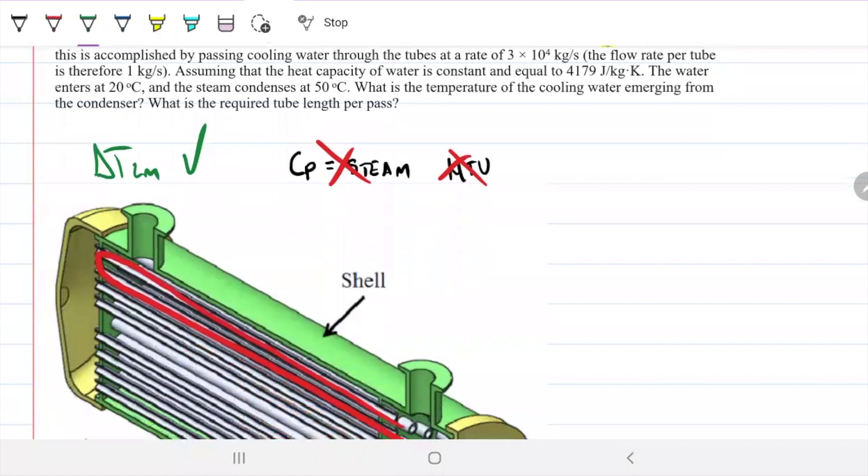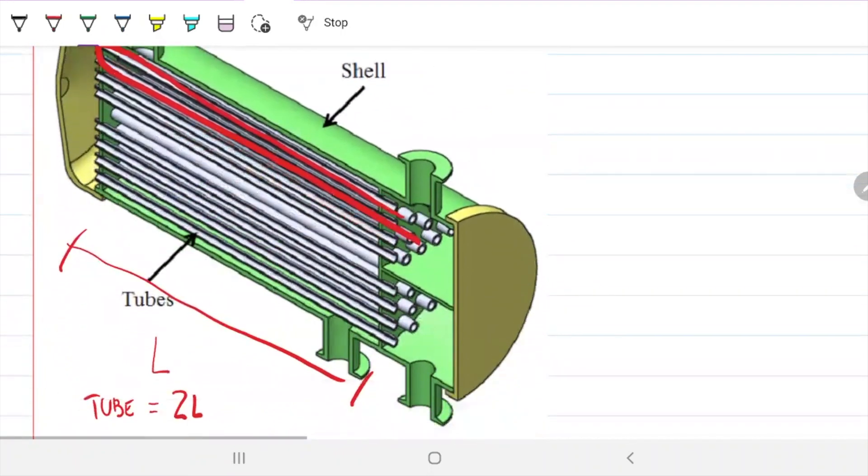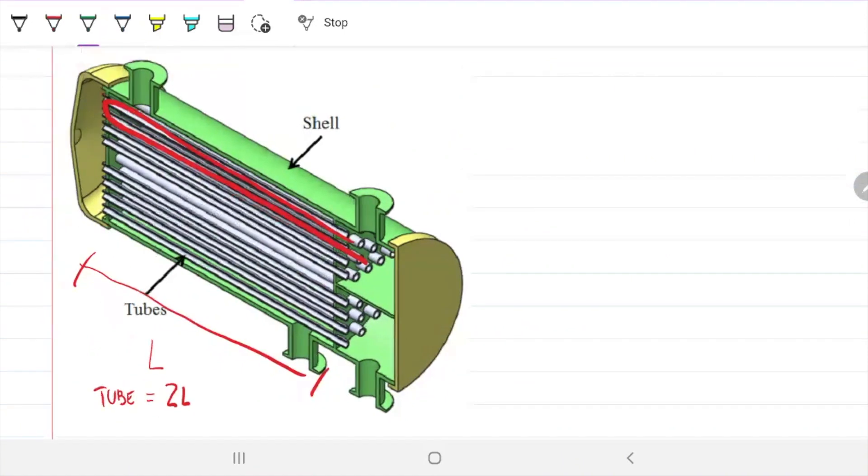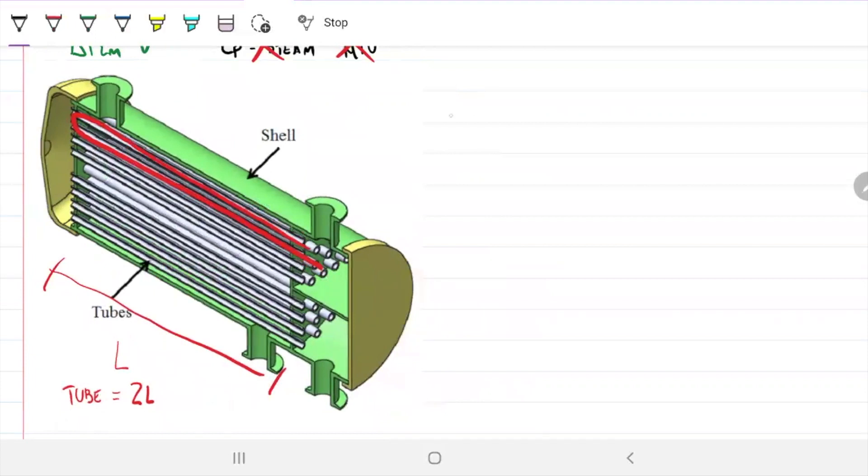What do we need to find? Temperature of cold out and the length per pass, this L here. We're looking for this L that I drew before. This would be one pass and this would be one pass. That would be half the length of each tube. We know that Q equals surface area times the overall heat transfer coefficient times the correction factor times delta T log mean.